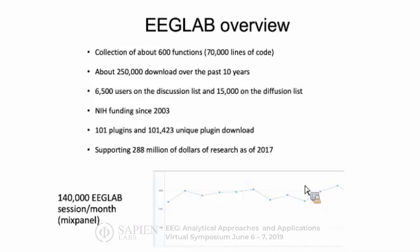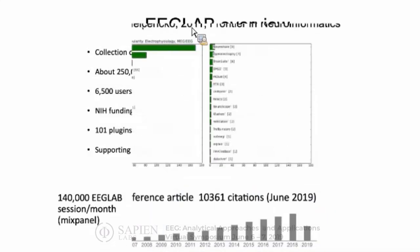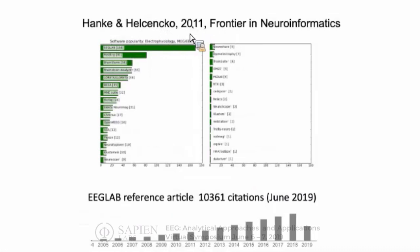Some users will start many sessions, so it's not unique users. The paper published by Anke and Ekkenko in 2011 shows that EEG Lab was the most popular software at that time. We can also see that the number of citations for our reference paper is still increasing as of 2019. There are about five citations per day right now of the EEG Lab paper.